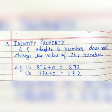Property number 3: Identity property. A zero added to a number does not change the value of the number. For example, if you add 0 to 872, it becomes 872. 1182 plus 0 equals 1182.